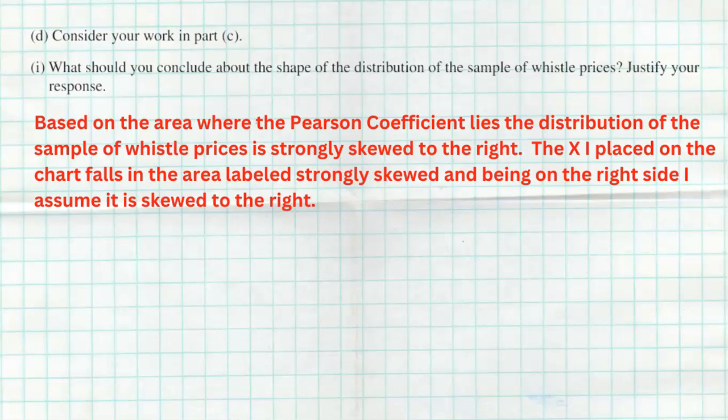That's exactly what the next question asks. What would you conclude about the shape of the distribution of the sample of whistles? Justify your response. Well, based on the area where our Pearson coefficient lies, the distribution of the sample of whistle prices is strongly skewed to the right. Notice how I answered your question with context. I even mentioned whistle prices again. You always want to use context when you give these answers, especially for full credit. I even added more. The X I placed on the chart falls in the area labeled strongly skewed. And being on the right-hand side, I assumed that that means it was strongly skewed to the right, which we kind of already saw in the dot plot as well. Over-explain yourself. Don't say things that aren't true, obviously, but don't just give simple answers like, oh, that's where the X was. Explain it in context, and I think that this answer I have here is a pretty good explanation of that.